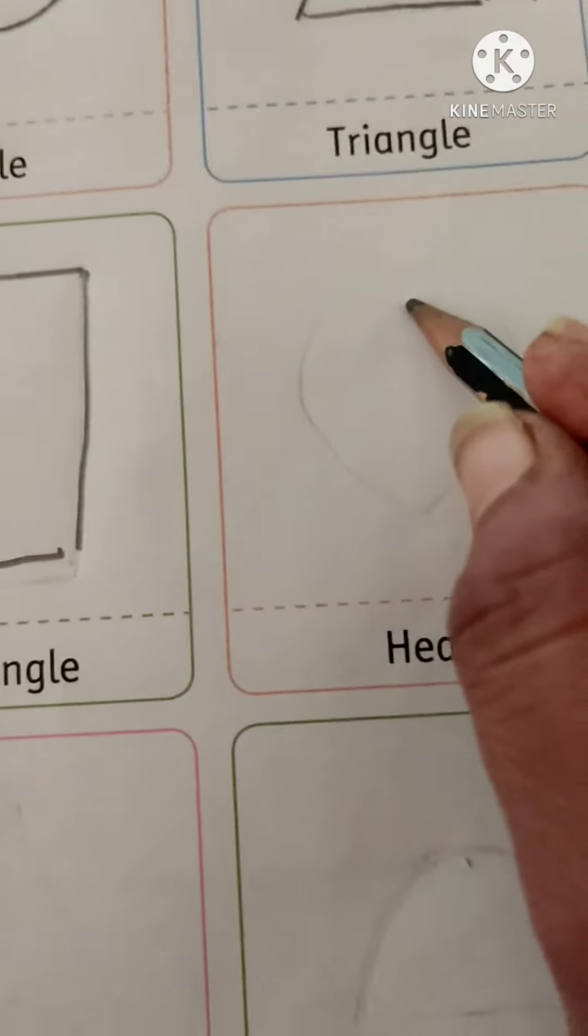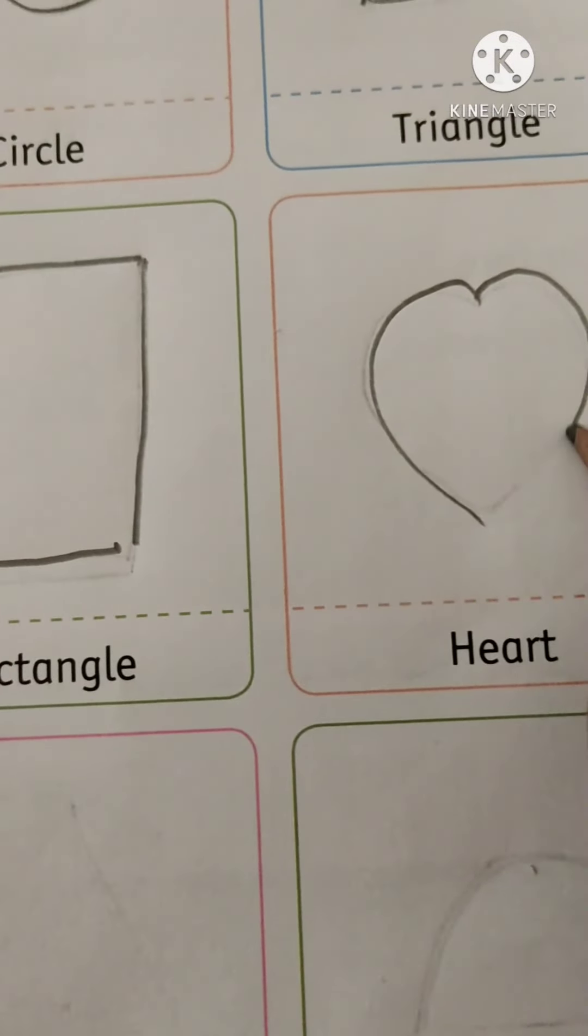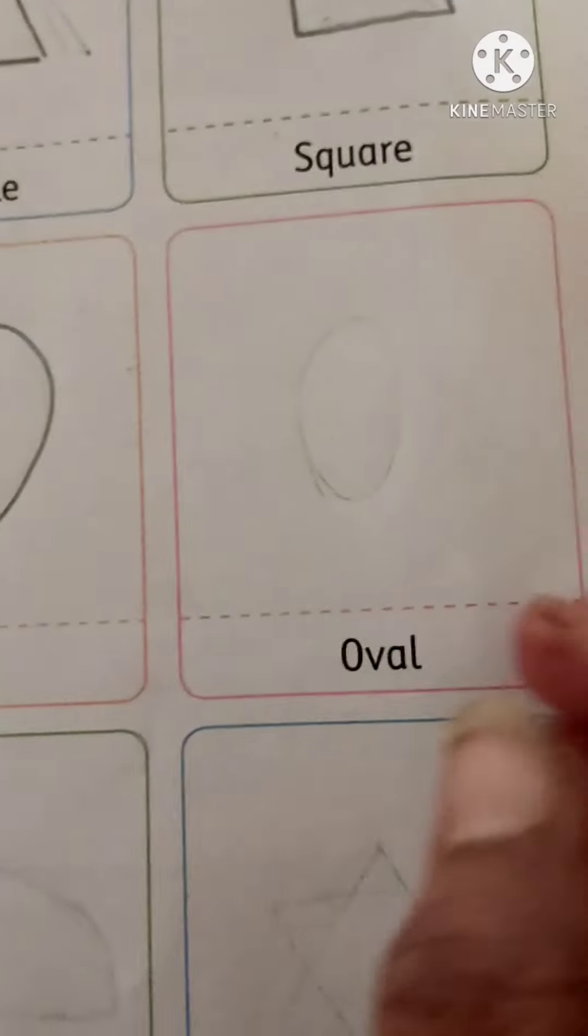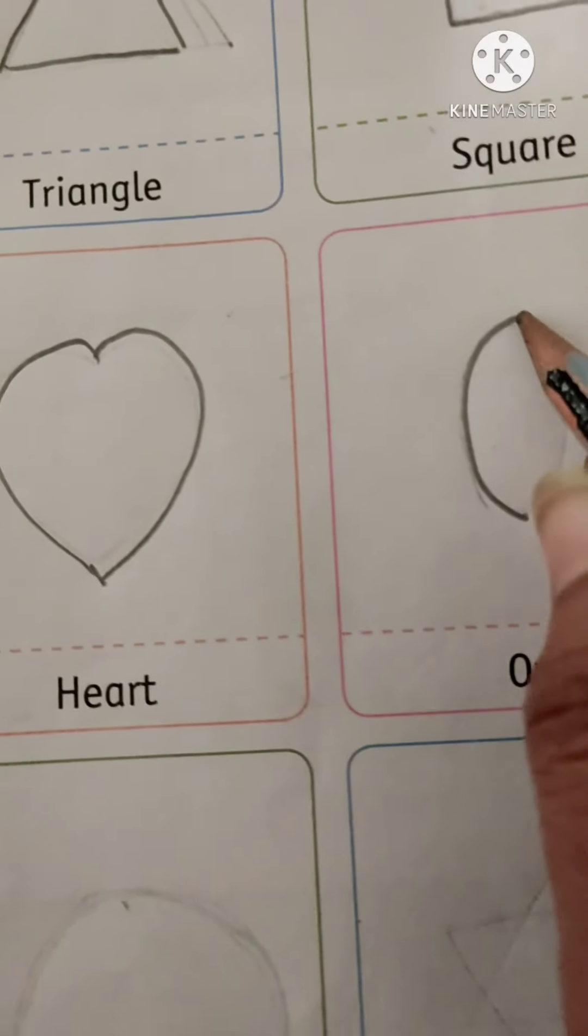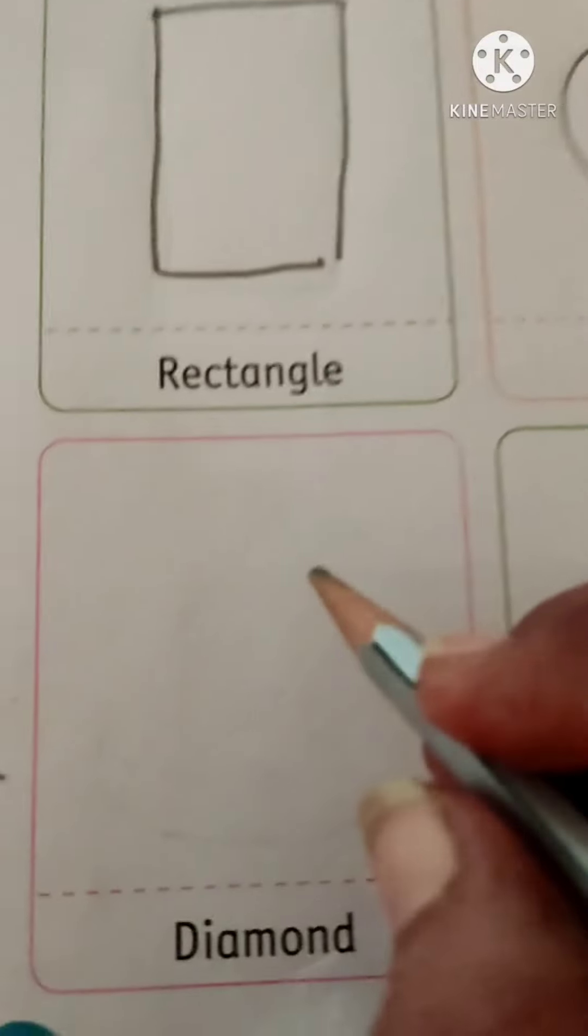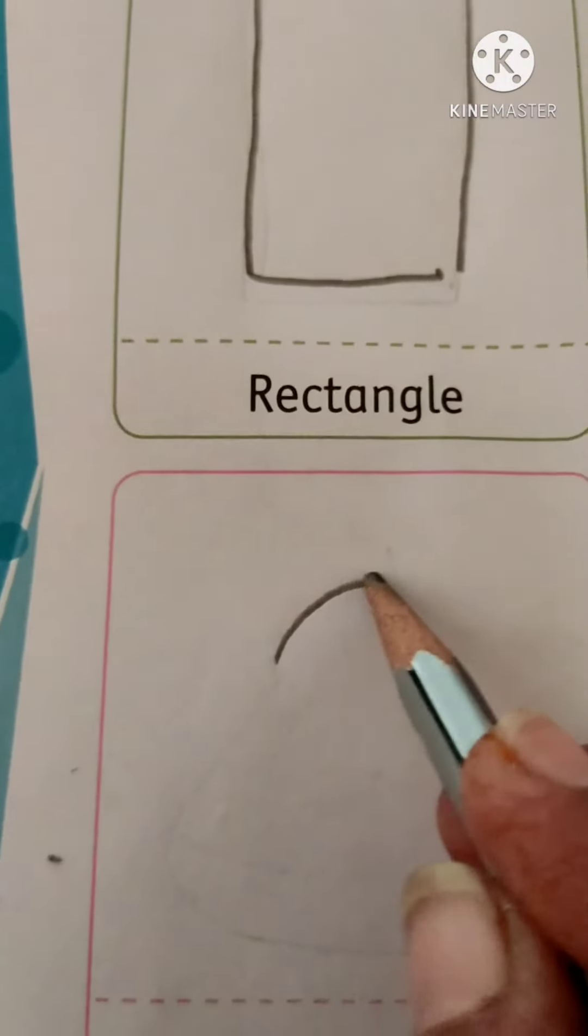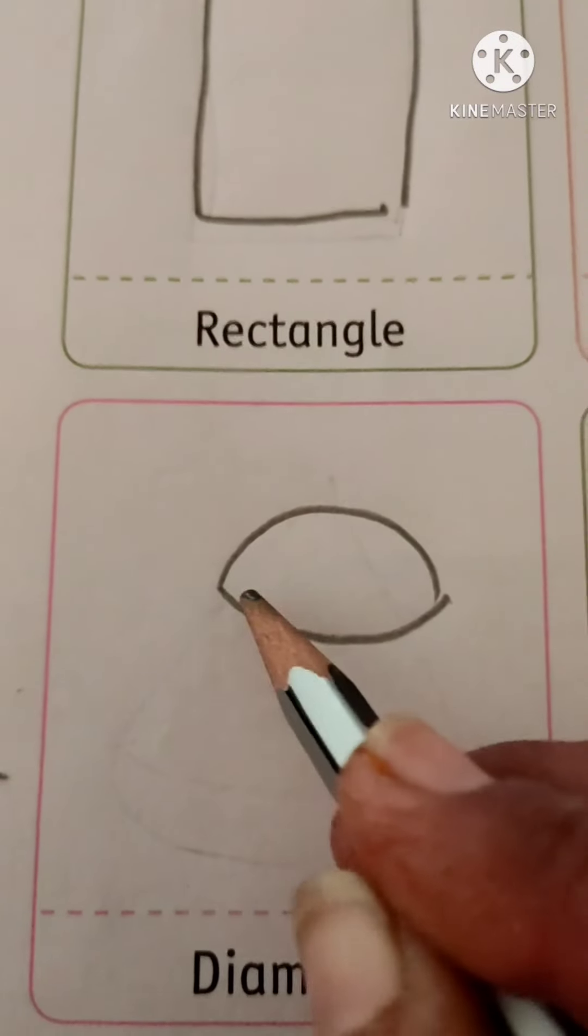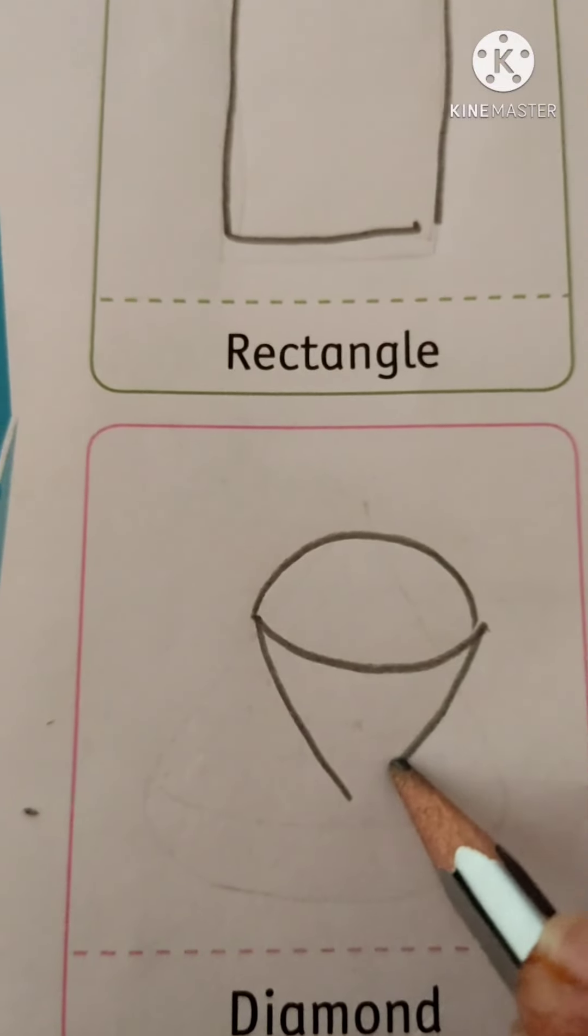Heart shape. Then oval. Then diamond shape. This is diamond.